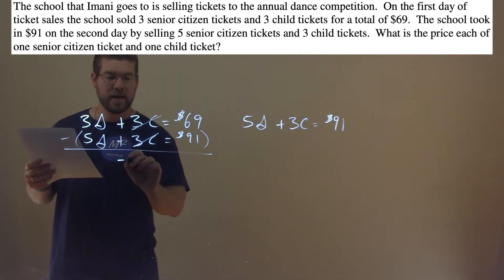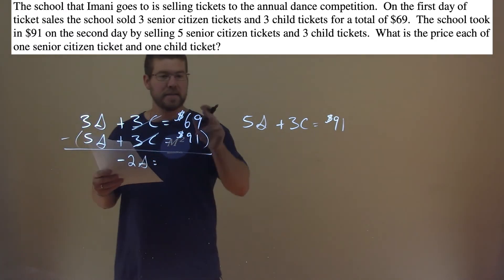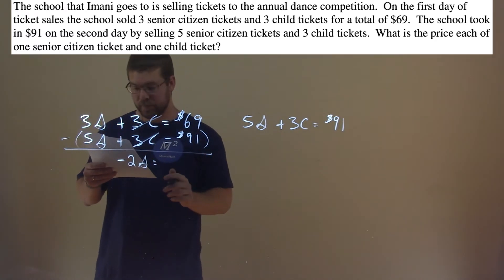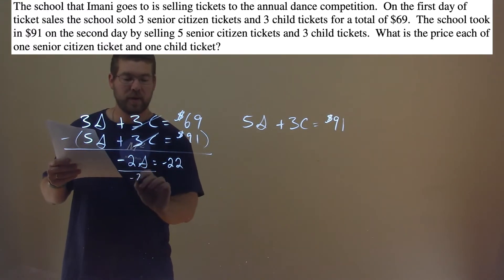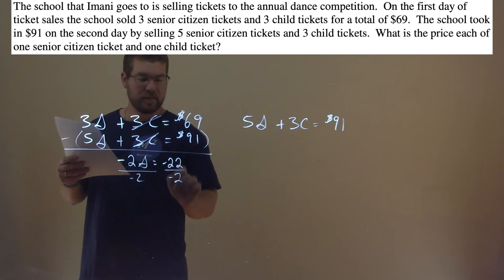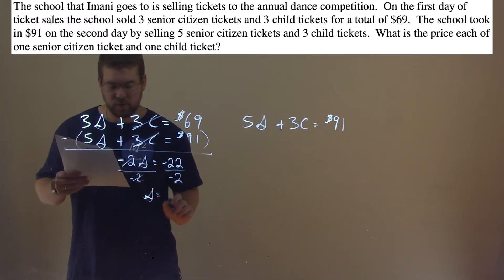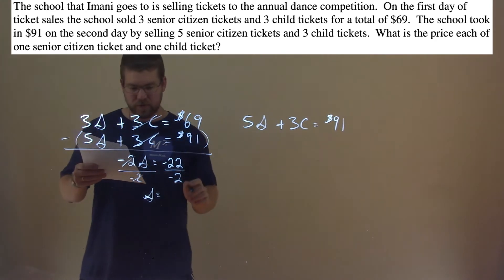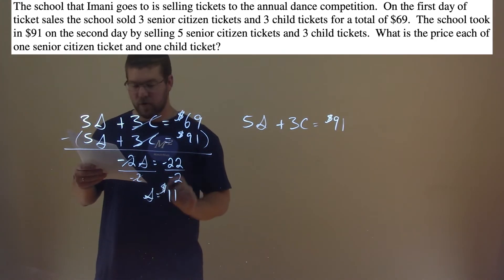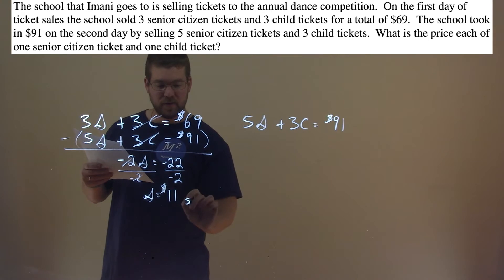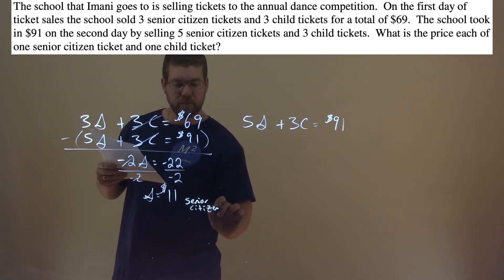3S minus 5S is negative 2S, and 69 minus 91 is negative 22. I divide both sides by negative 2. The negatives cancel on the right, and negative 2 cancels on the left. So S equals negative 22 divided by negative 2, which is positive 11. So $11 is the price of a senior citizen ticket.